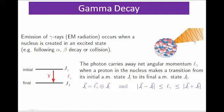A photon carries away not only the net energy but also the net angular momentum. The initial nucleus at the higher energy level, which is unstable due to high energy, attains stability by coming to the final nuclear state. The same nucleus in the initial and final states contains the same nucleons but differs only in energy. The extra energy is emitted in the form of gamma rays.